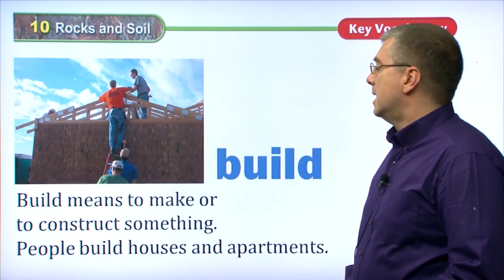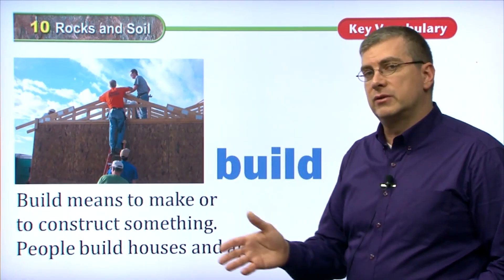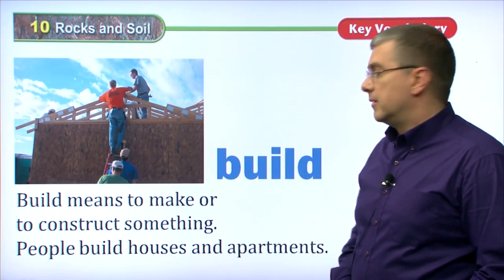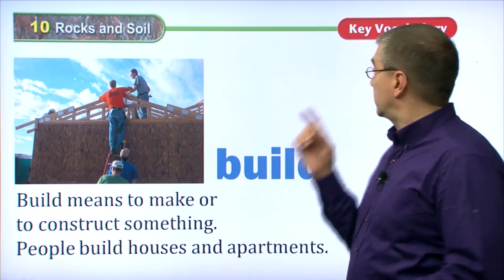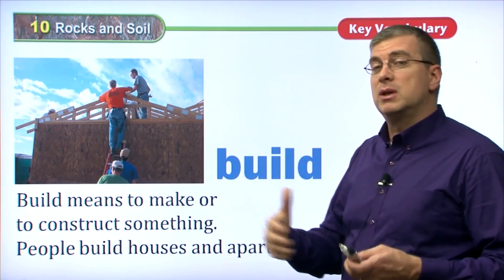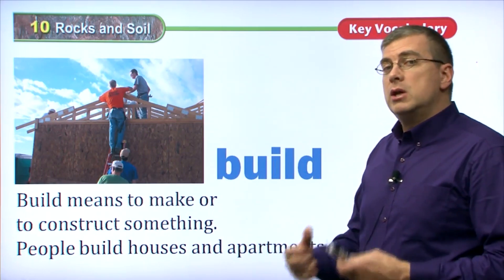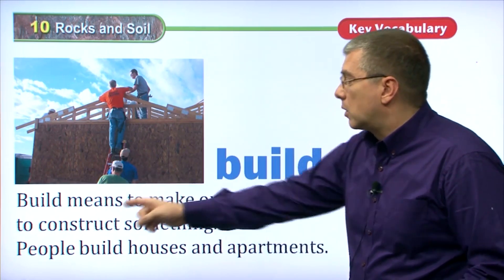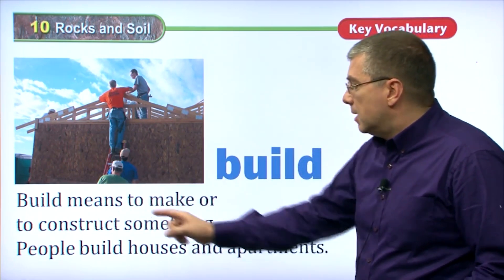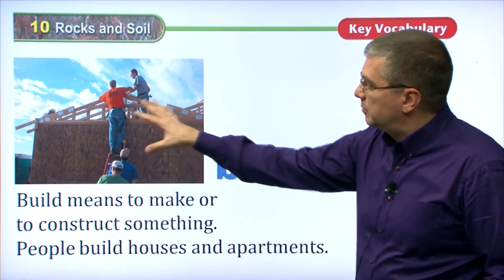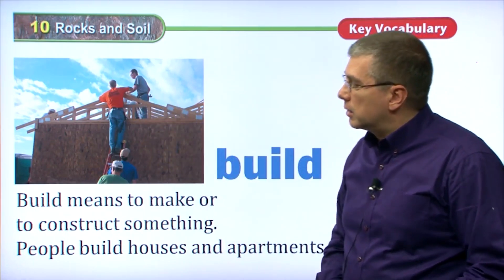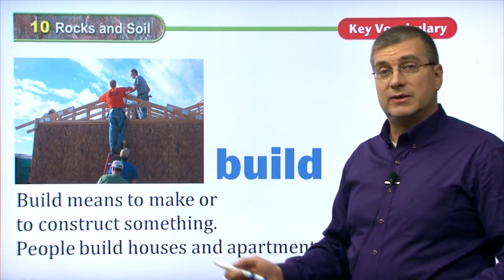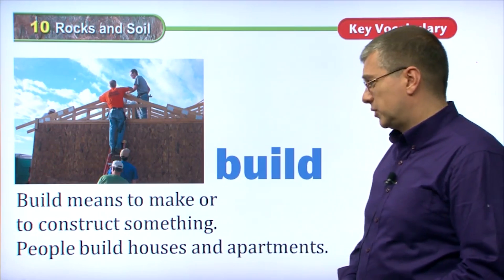Now we've covered the five different types of rocks and soil. We have two more words to look at. One is a verb — the verb is to build. To build something. I just told you about granite; people use granite in their homes. You use different materials in your homes — you build something. Build means to make or to construct something. People build houses and apartments. These people here are building what looks like a house or part of an apartment building. To build means to create or to construct something, usually a building.